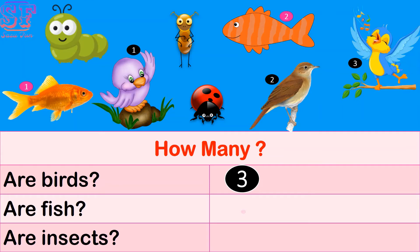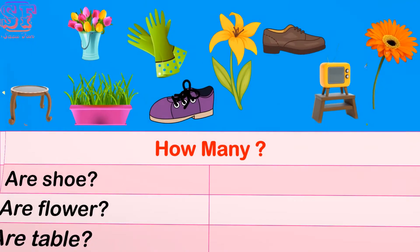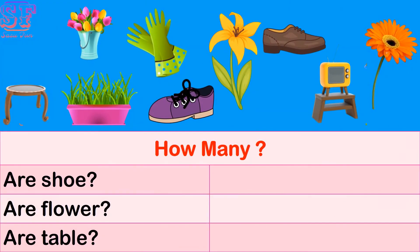How many are yellow birds can you see? How many are birds? Two fish. How many are insects? Can you see? One, two, three — yes, three insects. How many are sooths?